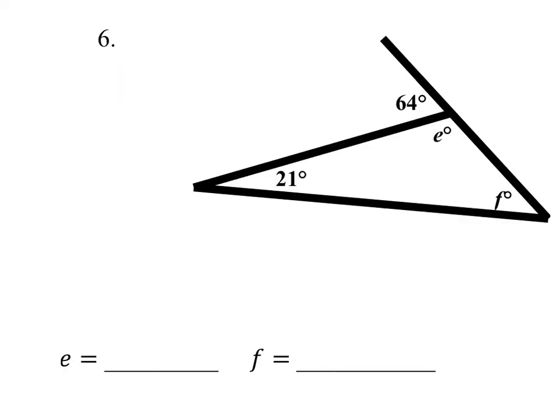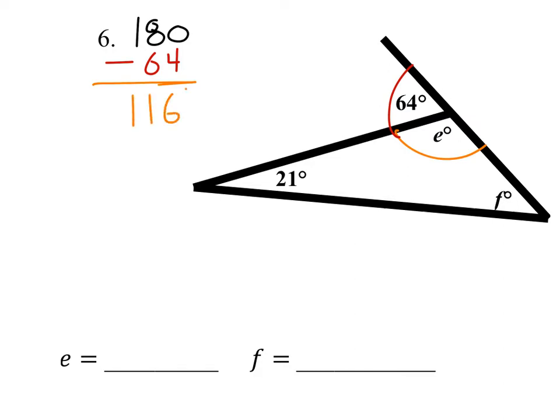There's one way we can solve for E. The first way we would look at is E and the 64 degrees as 180 degrees, because it's a straight line right there. So all we need to do is take 180 minus 64, and that gives us the answer: 116 degrees. That's angle E at 116 degrees.